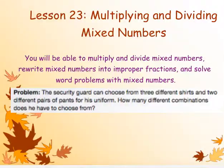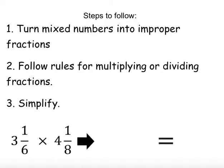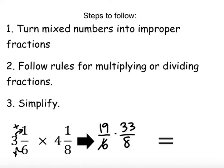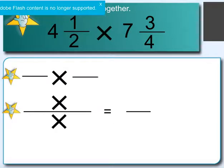When we get to mixed fractions — the next lesson — it's really just a one-step difference. We just need to turn our mixed numbers into improper fractions. So we follow our rules for multiplying and dividing and simplify. For the problem 3 and 1 sixth times 4 and 1 eighth, we convert to improper fractions by multiplying and then adding, getting 19 over 6 times 33 over 8. We can simplify: 3 into 6 is 2, and 3 into 33 is 11, so 19 times 11 is 209 divided by 16.